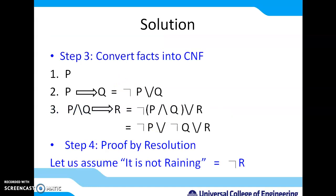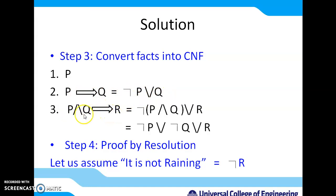Now convert to CNF. The first sentence P remains as it is. The second sentence P implies Q becomes NOT P OR Q. The third sentence (P AND Q) implies R becomes NOT(P AND Q) OR R, and taking the negation inside using De Morgan's law gives NOT P OR NOT Q OR R.